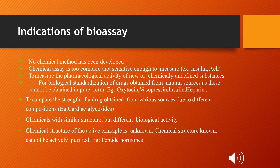The indications of bioassay include: when there is no chemical method available to perform the assay, or when a chemical method exists but is too complex. Bioassay is also used to measure the pharmacological activity of new or chemically undefined substances, or when a substance is collected from various sources with different compositions. Additionally, if we do not know the chemical structure of a compound, or if a compound has a similar structure but different pharmacological activity, bioassay is indicated for its study.